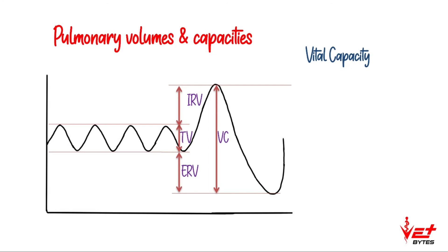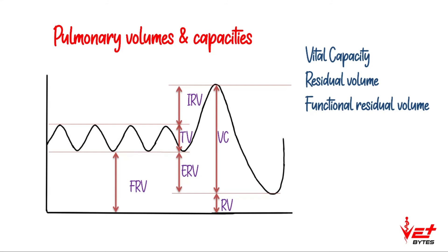Vital capacity is the maximum amount of air that can be inspired even after maximum expiration. The volume below the vital capacity — remaining even after forced expiration — is referred to as residual volume. The volume remaining after normal quiet expiration is referred to as functional residual volume.